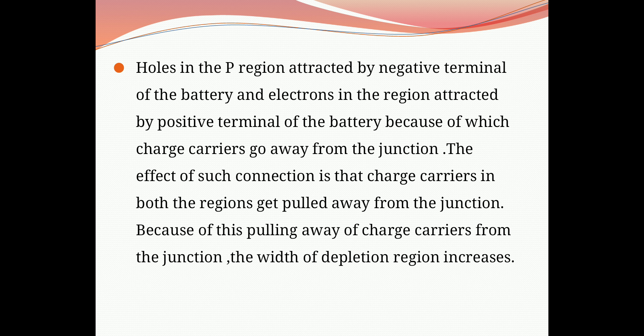Holes in the P region are attracted by the negative terminal of the battery and electrons in the N region are attracted by the positive terminal of the battery. Because of this, charge carriers go away from the junction — charge carriers in both regions get pulled away from the junction. And because of this pulling away of charge carriers, the width of the depletion layer increases.